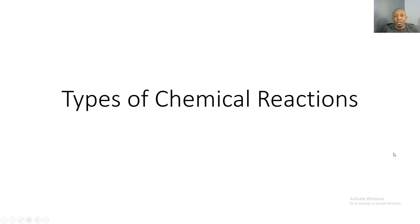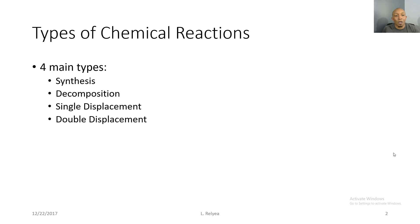Good afternoon ladies and gentlemen, we're here once again for another awesome tutorial. This time we're going to be talking about the four main types of chemical reactions. There are four main types: synthesis, decomposition, single replacement, and double replacement, and we'll be talking about all four of them in the following slides.